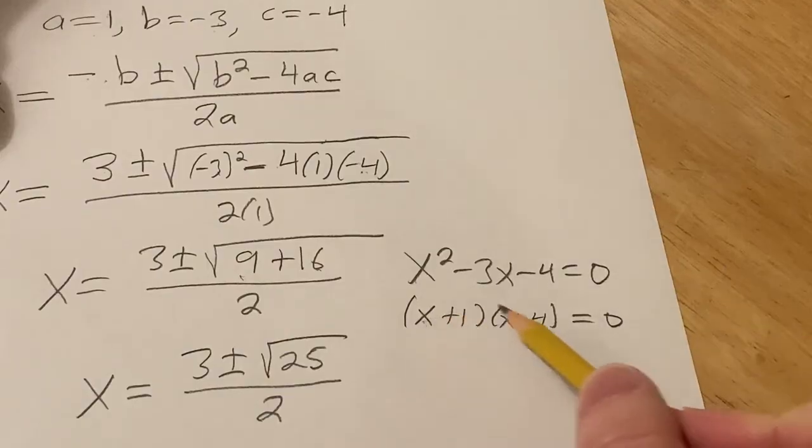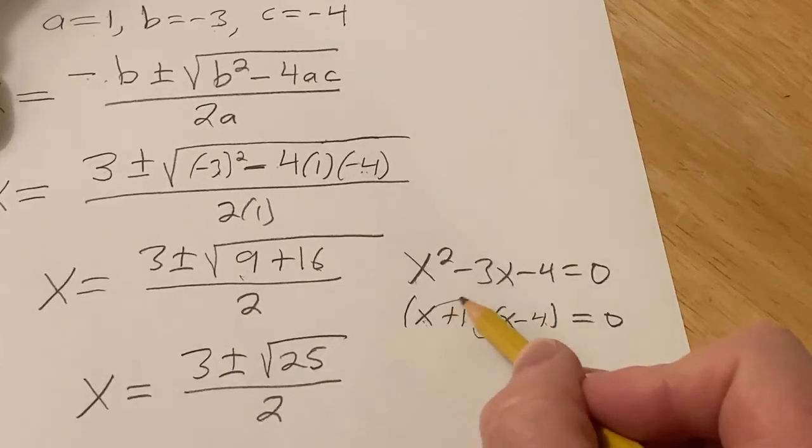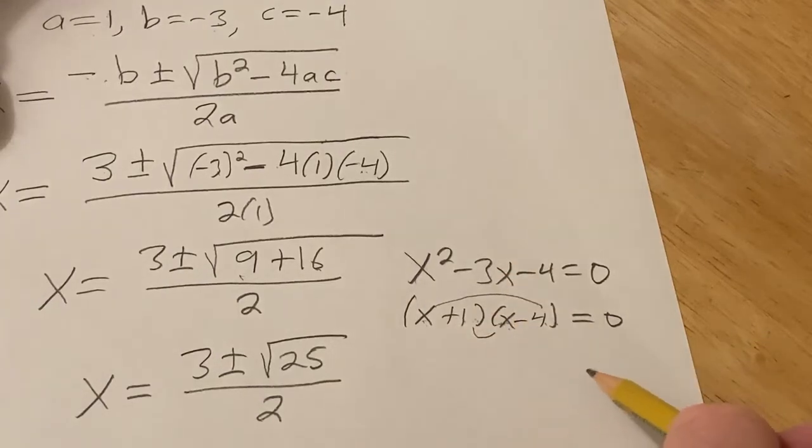And you can check. x times x is x squared. 1 times negative 4 is negative 4. 1 times x is x, write this term here, x, and negative 4x. So the inner and the outer, when you add them up, you get negative 3x.